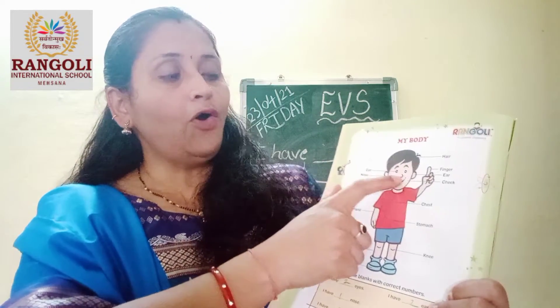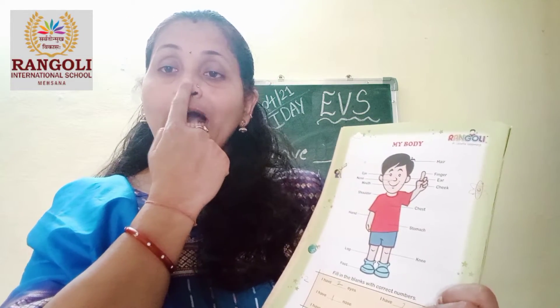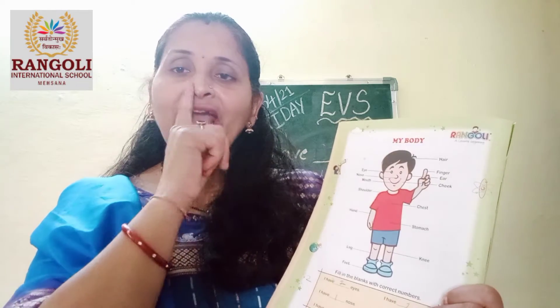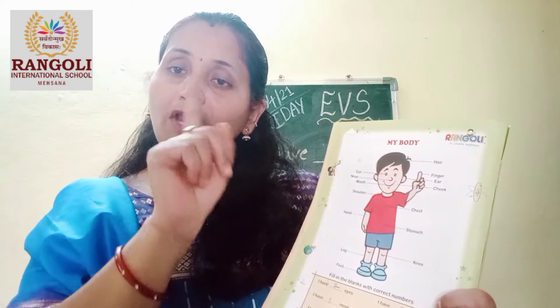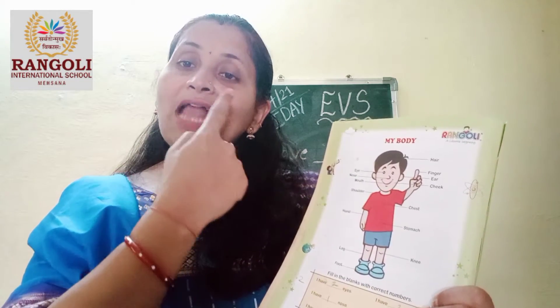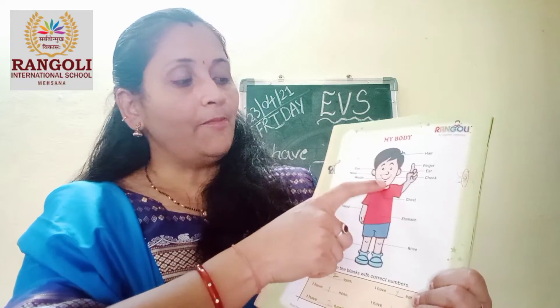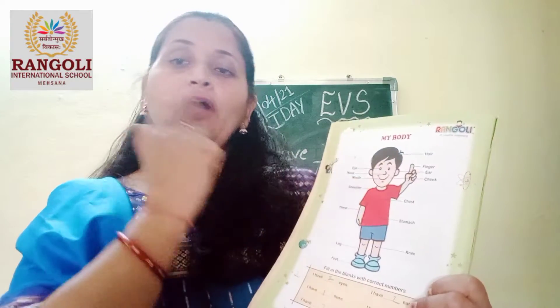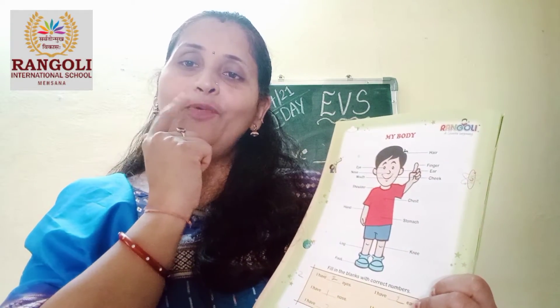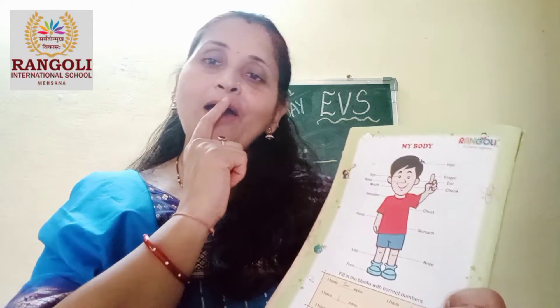Then, nose. How many noses? One. We have one nose and we smell with our nose. Then, mouth. How many mouths? One mouth. We speak with our mouth.